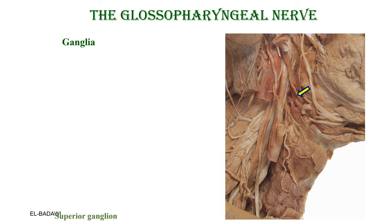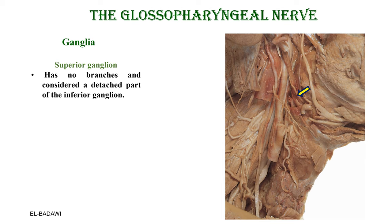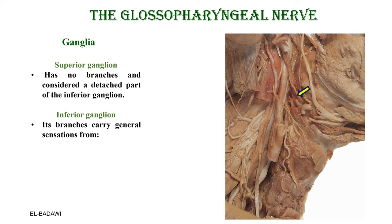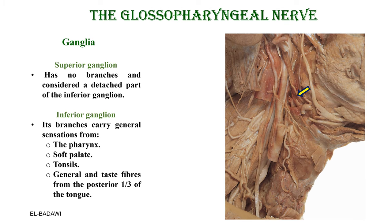The nerve has a superior ganglion, which has no branches and is considered a detached part of the inferior ganglion, which is more important. The branches carry general sensations. The inferior ganglion corresponds to the dorsal root ganglia in spinal nerves — any sensory nerve entering the central nervous system must relay outside. This ganglion carries general sensations from the pharynx, soft palate, tonsils, and taste fibers from the posterior third of the tongue.